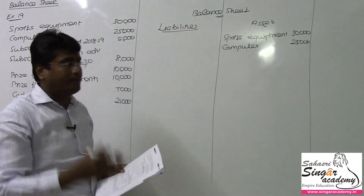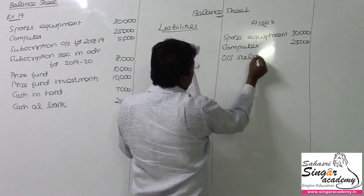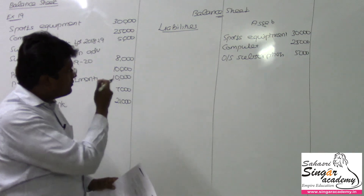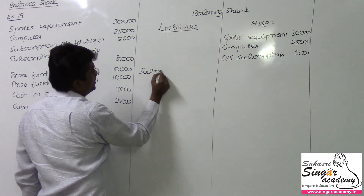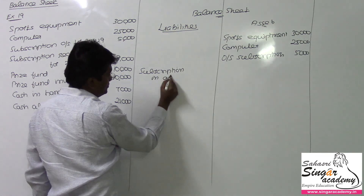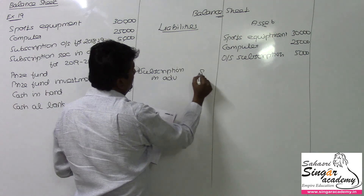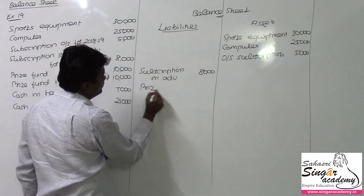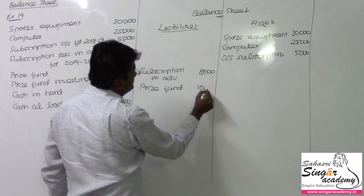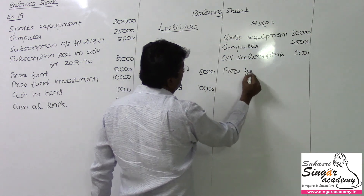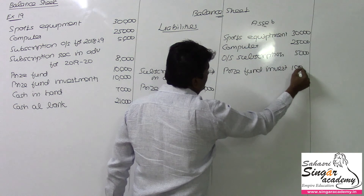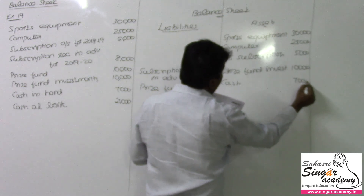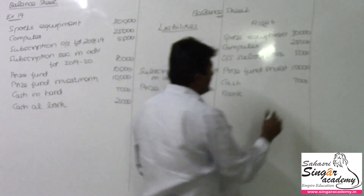Subscription outstanding is a pending income asset — outstanding subscription of 5,000 rupees. Subscription received in advance will come on the liability side — subscription in advance for the next year, value being 8,000 rupees. Prize fund is a specific fund on the liability side, value being 10,000 rupees. Prize fund investment is also 10,000 on the asset side as a specific fund. Cash in hand is 7,000 rupees and cash in bank is 21,000 rupees.